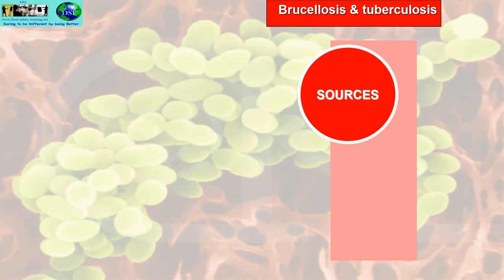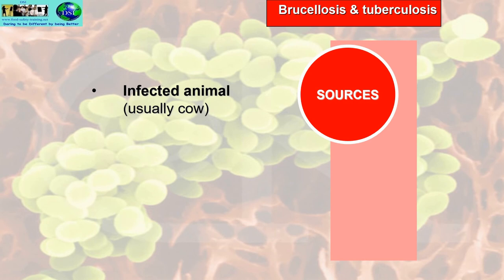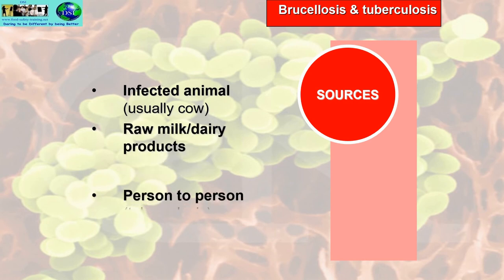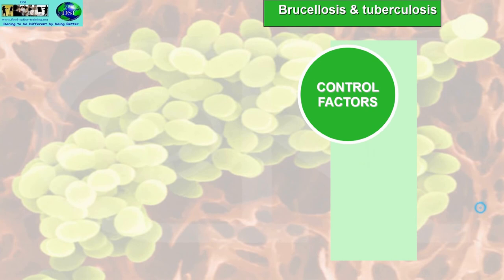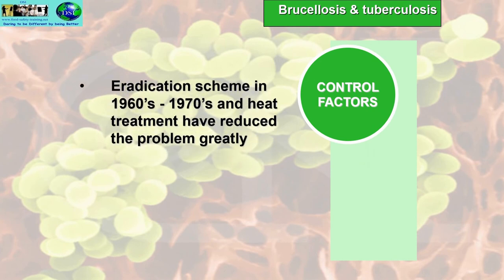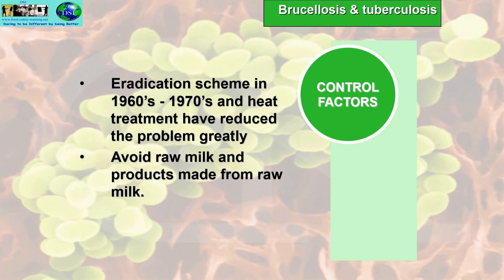For both Brucellosis and TB, sources include infected animals — usually cows — raw milk, dairy products, and person-to-person contact which can transmit TB. Control factors include the eradication scheme implemented in the 60s and 70s, and heat treatment of milk, which have greatly reduced these problems. However, still try to avoid raw milk and products made from raw milk.